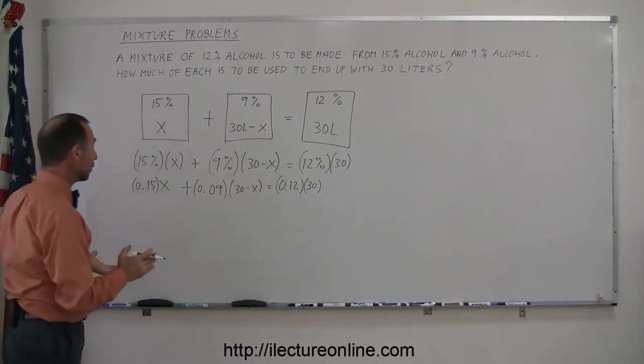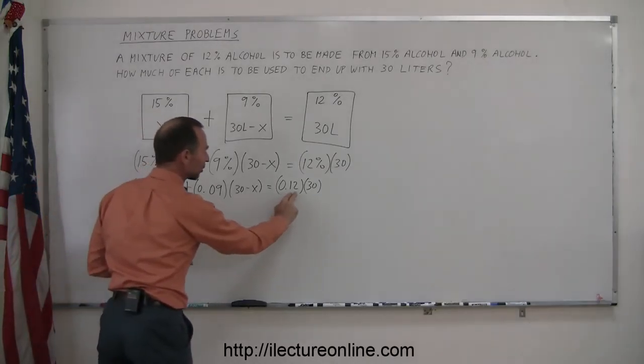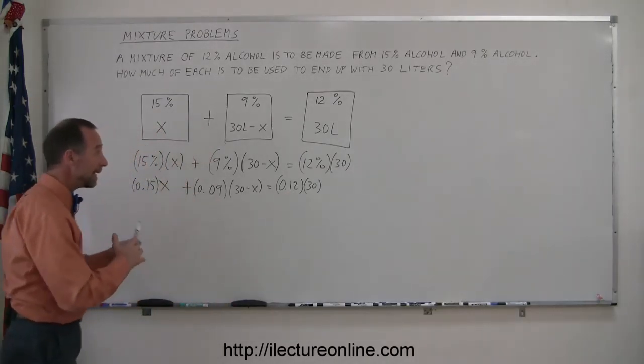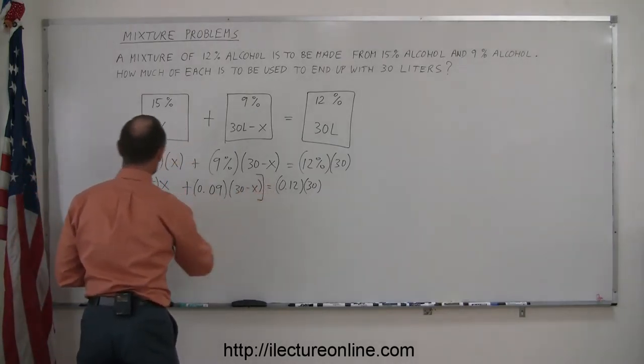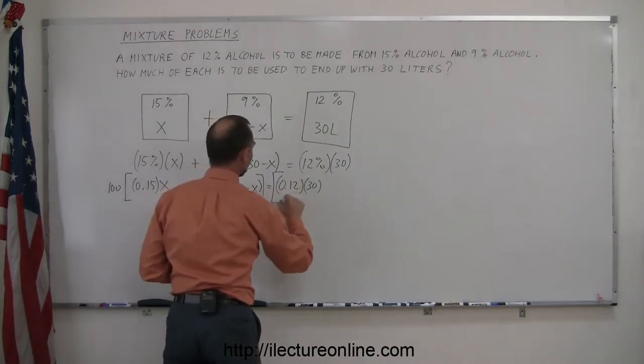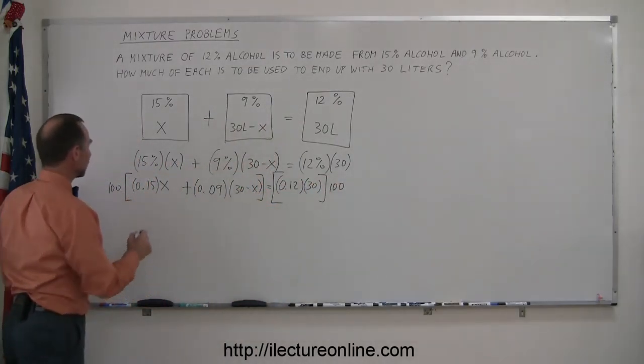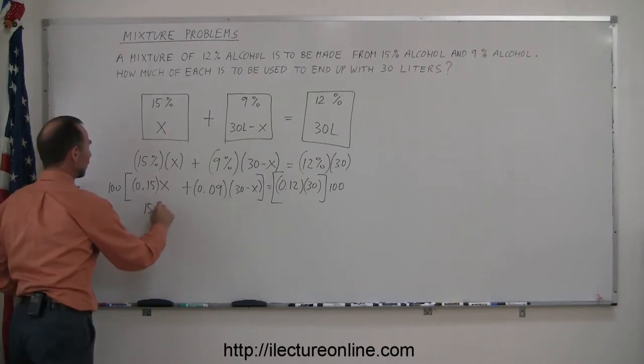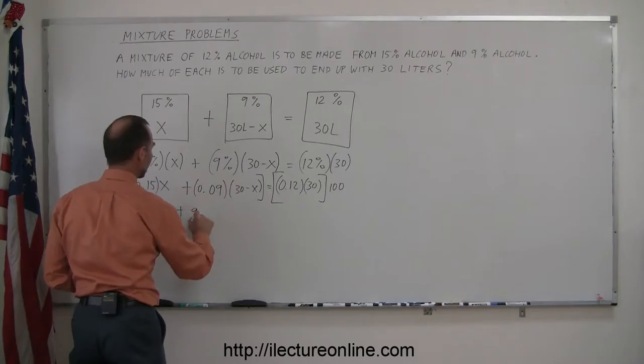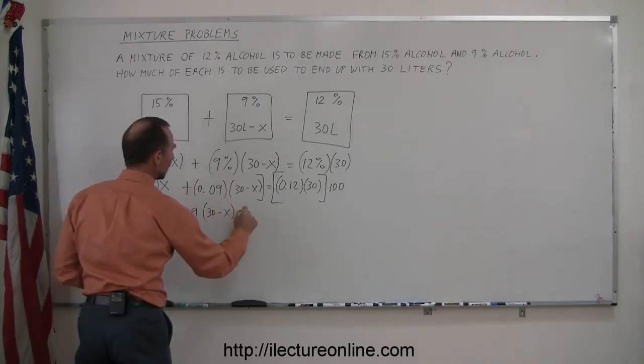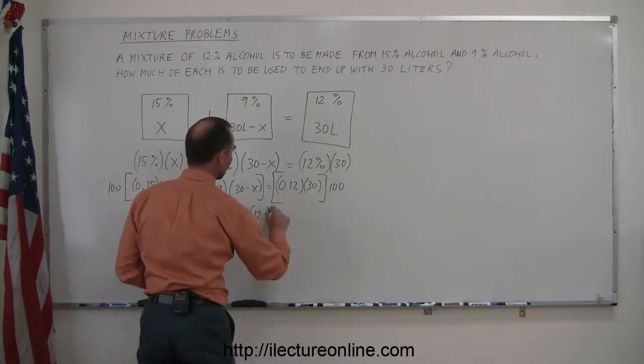The next thing you want to do is get rid of the decimals. We have two decimal places here, two decimal places here, two decimal places there. So by multiplying each side of the equation by 100, we can get rid of these decimal places. All right. So multiply this times 100, multiply this times 100. 100 times this gives me 15, so this becomes 15x. 100 times this gives me a 9, so plus 9 times 30 minus x equals 100 times this. That becomes 12 times 30.